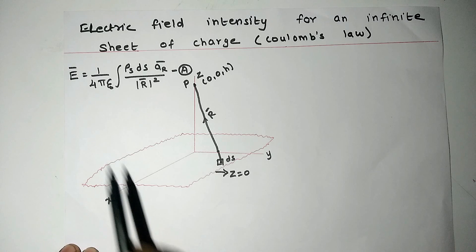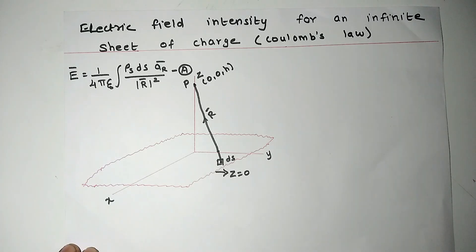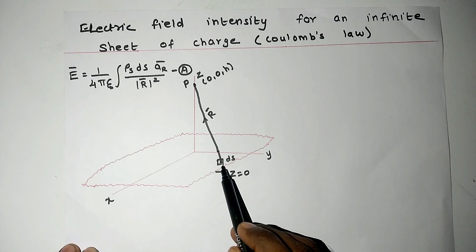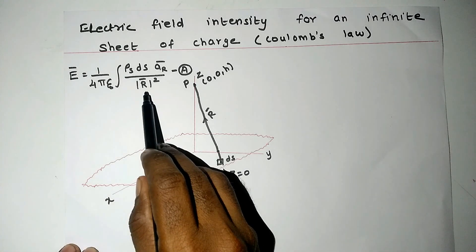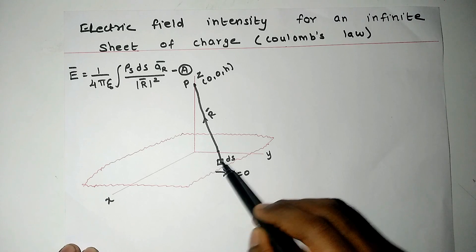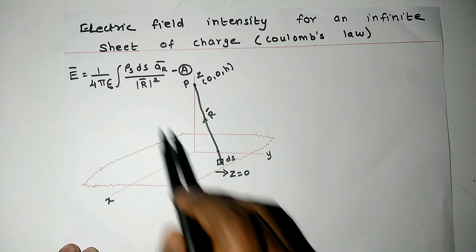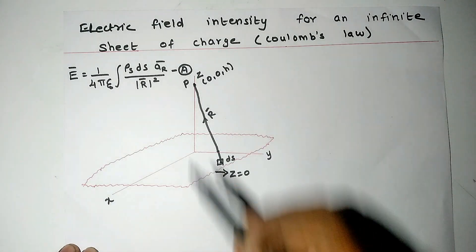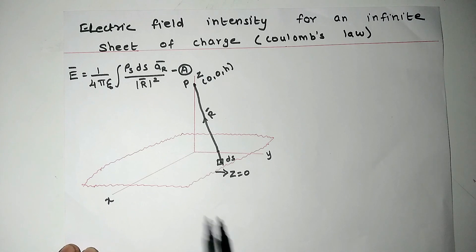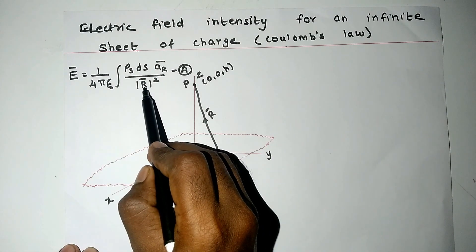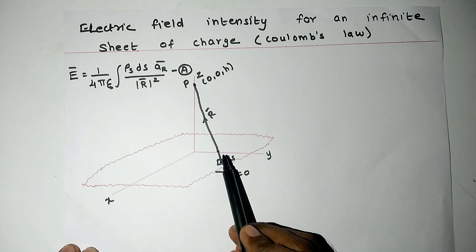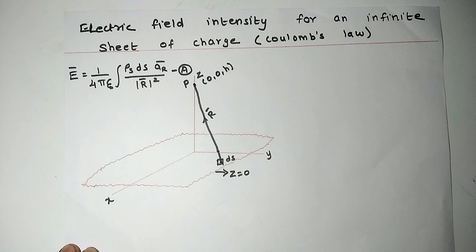In Equation A, E vector is the expression for electric field intensity for surface charge distribution. Here ε₀ is the permittivity of free space, ρ_s is the surface charge density, ds is the differential surface area, r is the vector extending from ds to the point P — this is a distance vector — and a_r is the unit vector along r vector. We are going to find out the values of ds, a_r, and r vector from the given figure, integrate, and reach the final result.